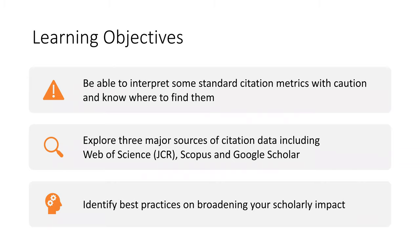There are three learning objectives. After this presentation, you will be able to interpret some standard citation metrics with caution and know where to find them. You will also be able to explore three major sources of citation data, including Web of Science, Scopus, and Google Scholar. Last, you will be able to identify best practices on broadening your scholarly impact.